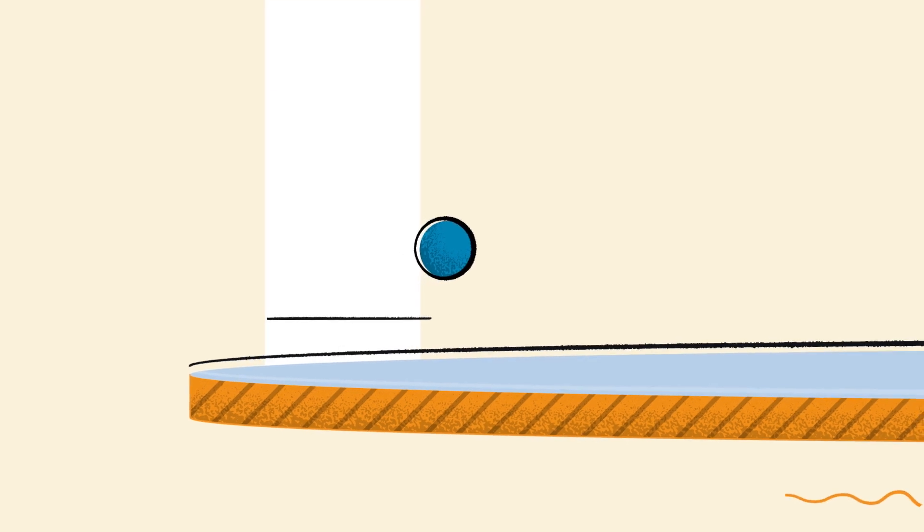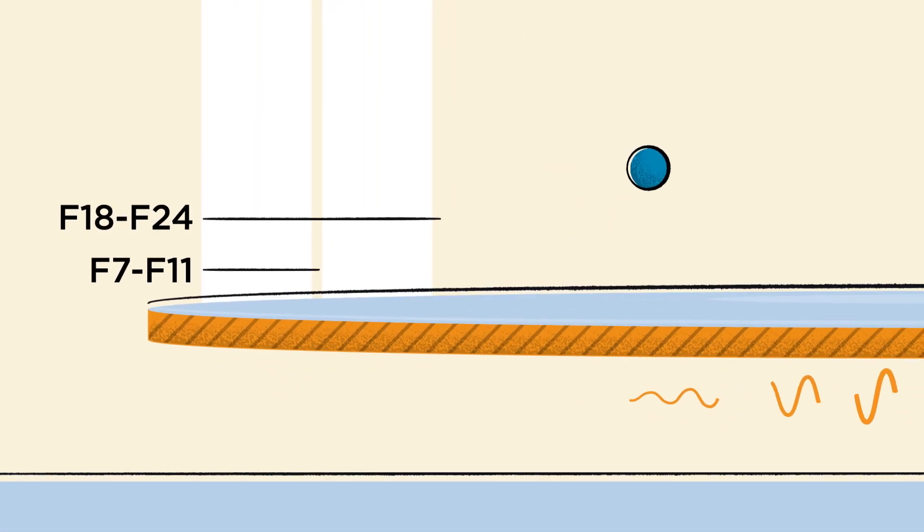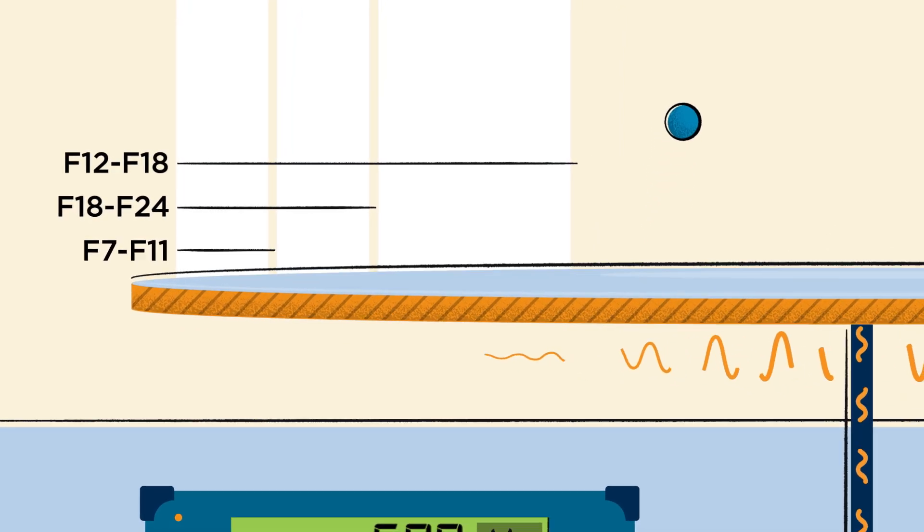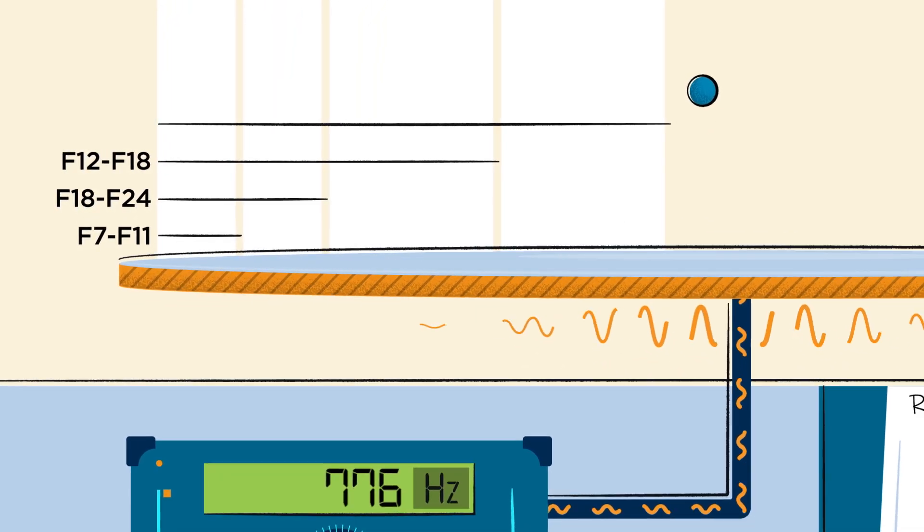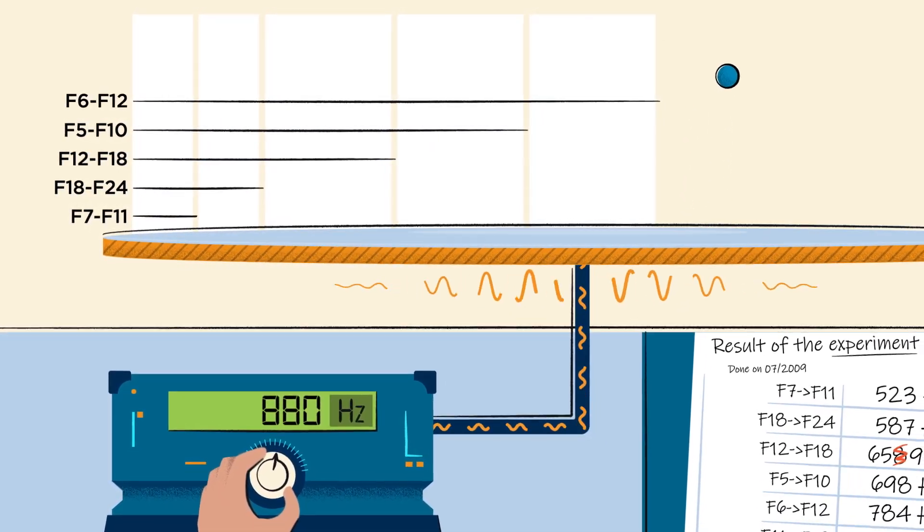When placing ultra-cold neutrons on a horizontal, highly polished mirror, they could see different quantic states. Since then, they have realized that they can make neutrons change from one quantic state to another by making the mirror vibrate at the right frequency.